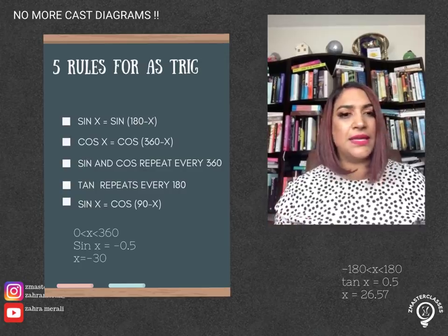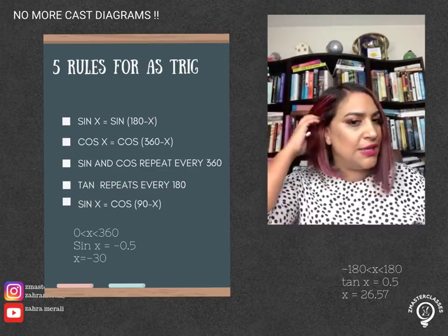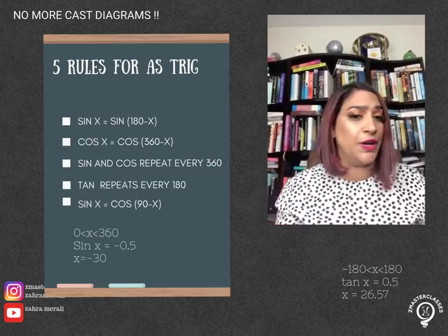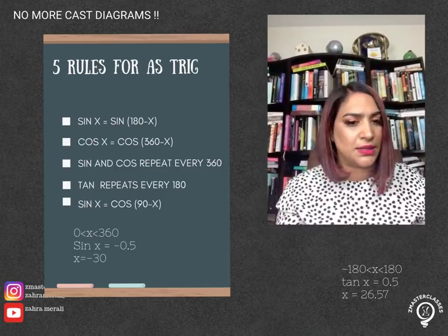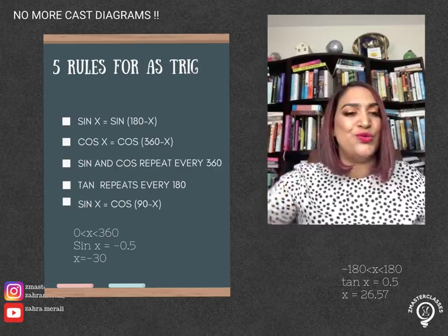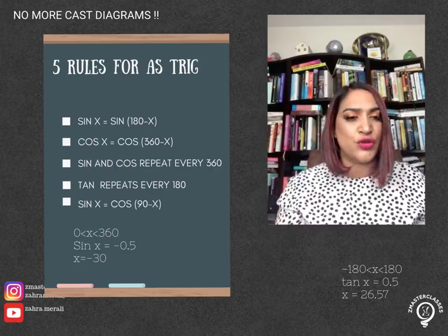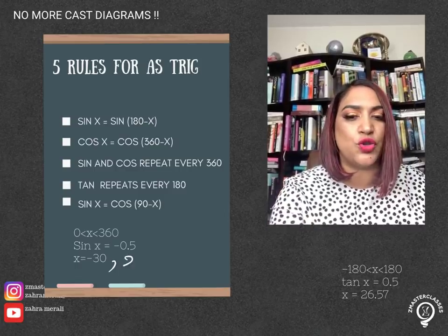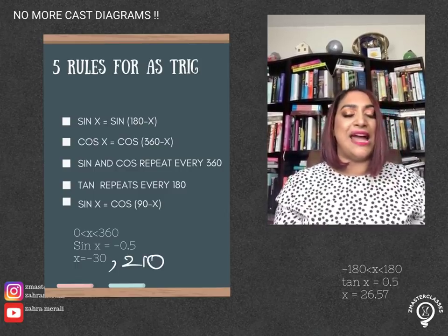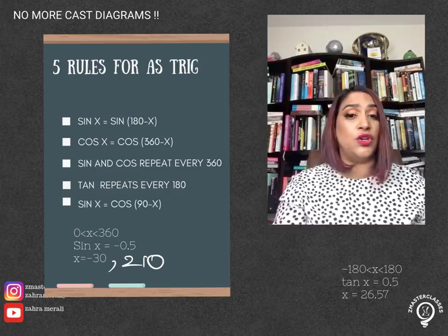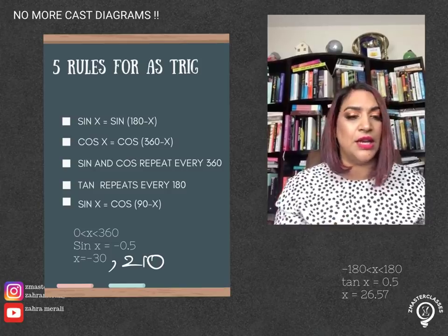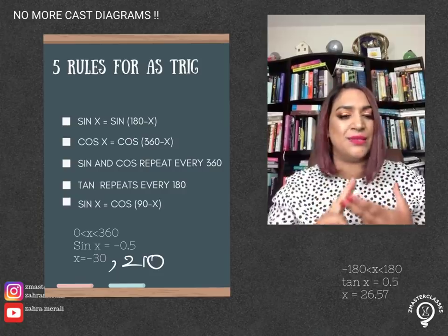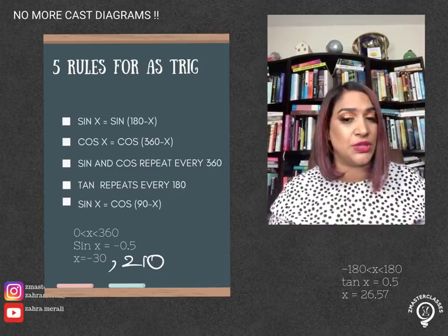So if we have sin x equals minus 0.5, into your calculator you're going to do inverse sin of minus 0.5. That's going to give you minus 30. Now use rule number one: 180 minus minus 30, which is going to give you 210. Now rule number three tells you sin and cos repeat every 360.